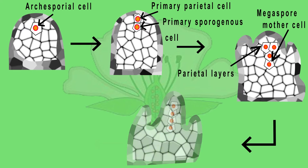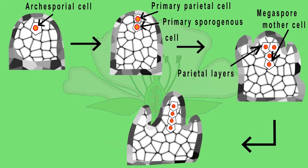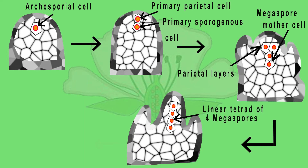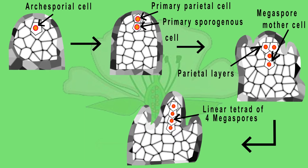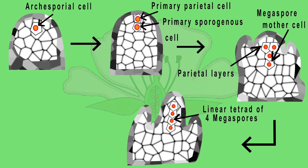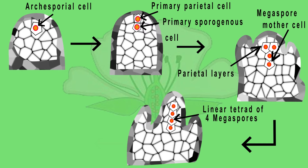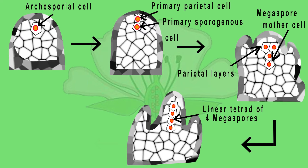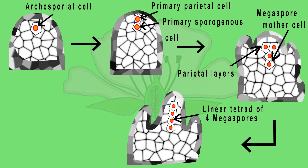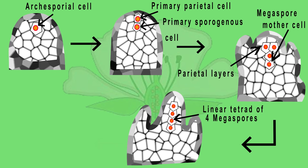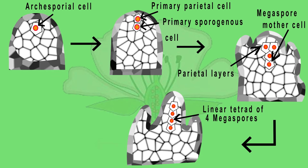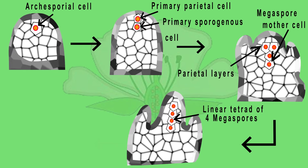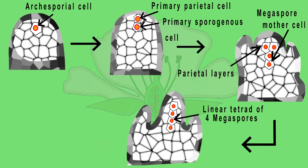The Megaspore mother cell undergoes meiotic division to form four haploid Megaspores. Based on the number of Megaspores that develop into the embryo sac, we have three basic types of development: monosporic, biosporic, and tetrasporic.